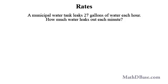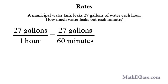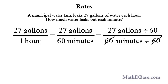Using the relationship between hours and minutes, 27 gallons per hour is equal to 27 gallons per 60 minutes. Dividing top and bottom by 60 to get a rate in minutes, we have 27 gallons divided by 60, over 60 minutes divided by 60.